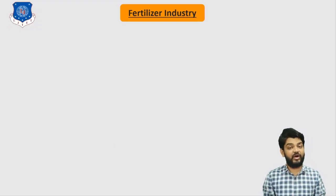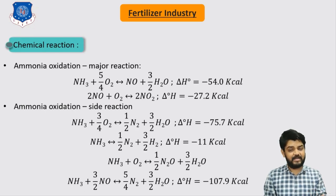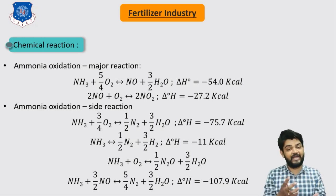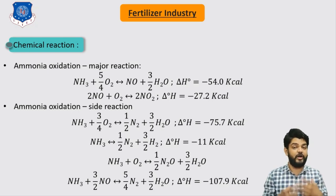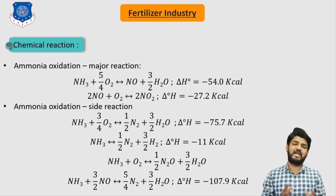In the previous video we understood the production of ammonia and just started nitric acid. If you missed that video you can find it using the i button on the top. Now let's quickly discuss the chemical reactions taking place in the production of nitric acid. I would suggest you check out the last video where we discussed the properties of nitric acid and the raw materials needed to manufacture it.